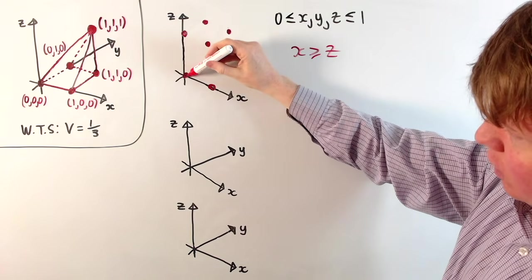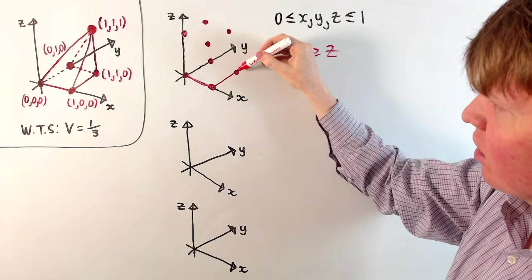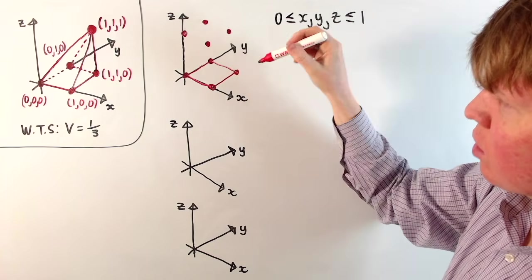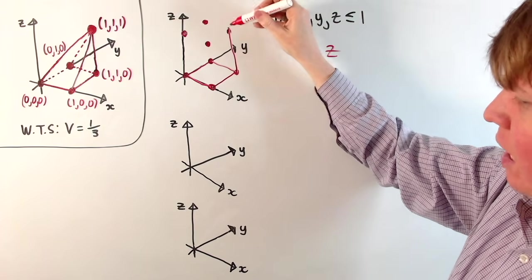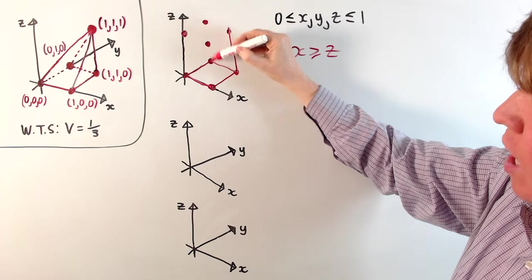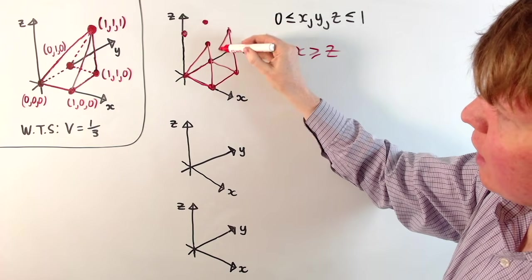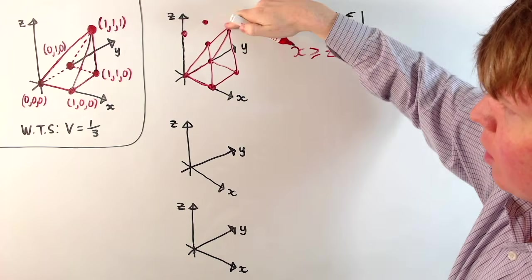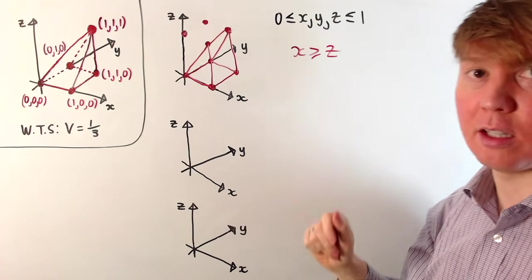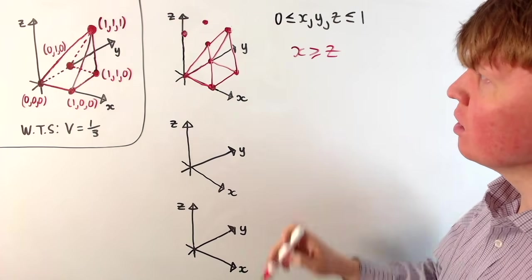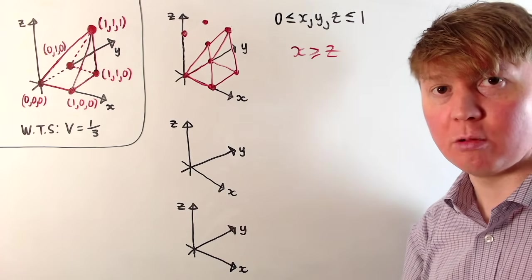For x greater than or equal to z, at the bottom where z is 0, x will be greater than or equal to z, so we include all of that. We'd also include all the way up to where x is still greater than or equal to z. So we get not quite a pyramid shape, but we get half of this cube — it's the half where, if you ignore y, it's like the familiar line x equals z. Half of this cube region is characterized by x greater than or equal to z.